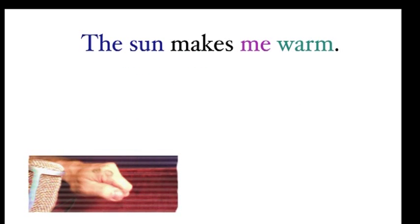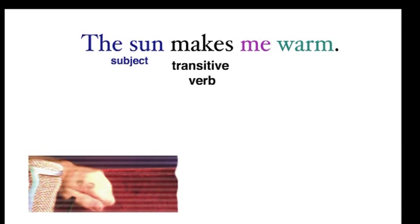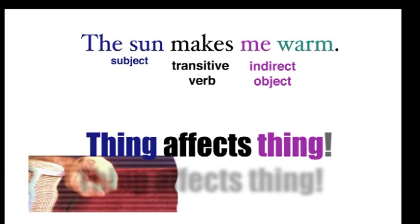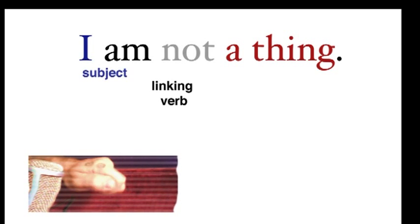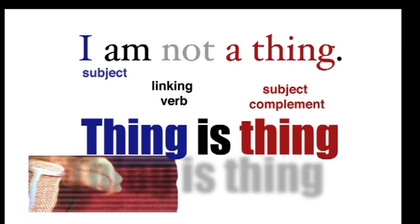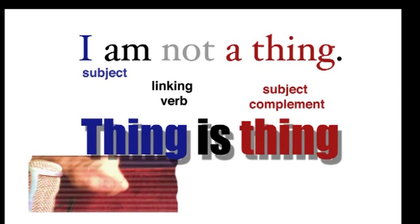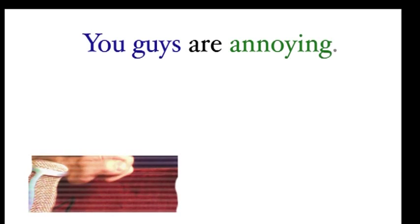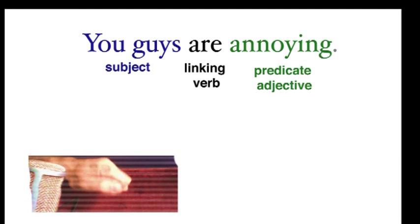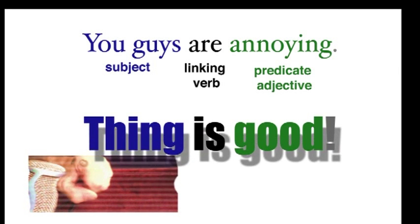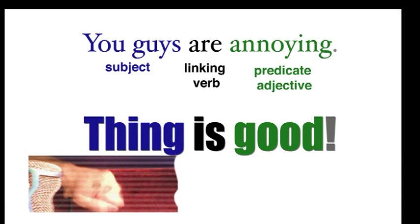The sun makes me warm. Transitive verb and object — thing affects thing! Okay, but I am not a thing. Linking verb and complement — thing is thing! You guys are annoying. Linking verb and predicate adjective — thing is good!